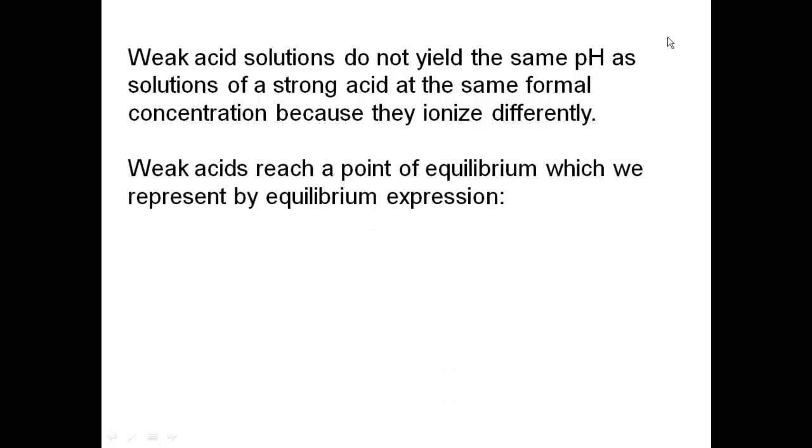Weak acids reach a point of equilibrium, which we represent by an equilibrium expression. Say, for example, here, I have my HCN plus water forming my hydronium ion and CN minus. Now, this is just going by Bronsted-Lowry definition. We know that this is my acid component. Therefore, water is my base component. So, my acid is going to donate the proton, which is going to form my hydronium ion and CN minus conjugate base.